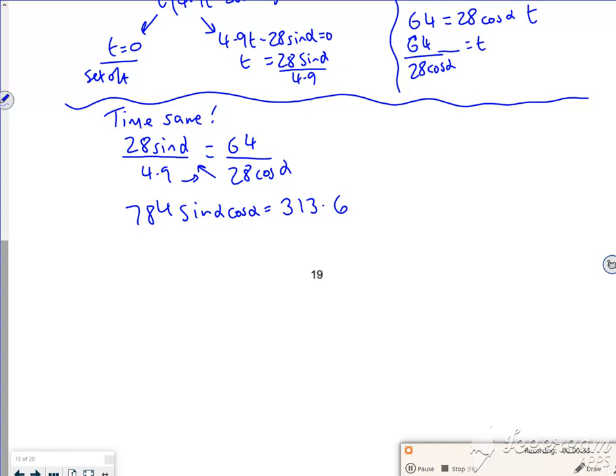If I do 313.6 divided by 784, that's the same as two-fifths.